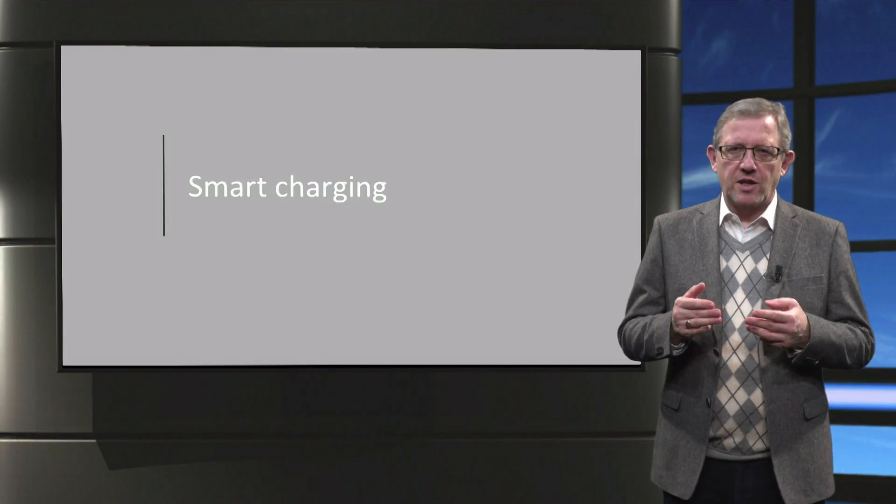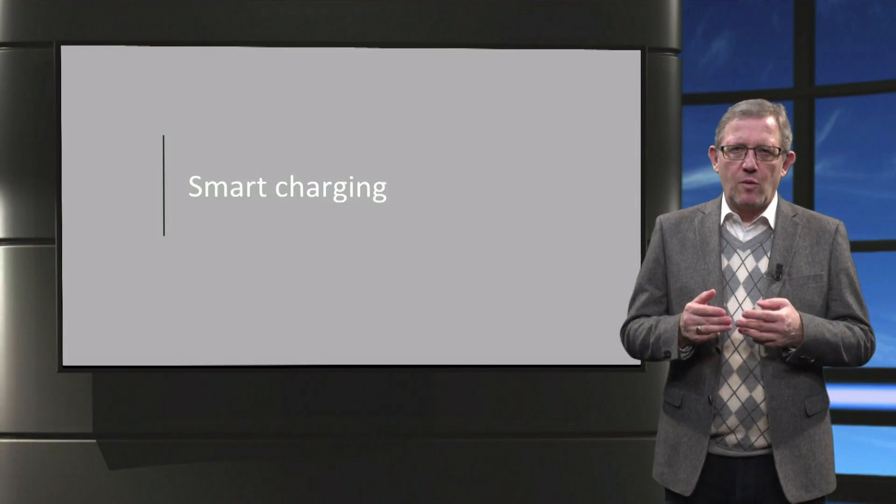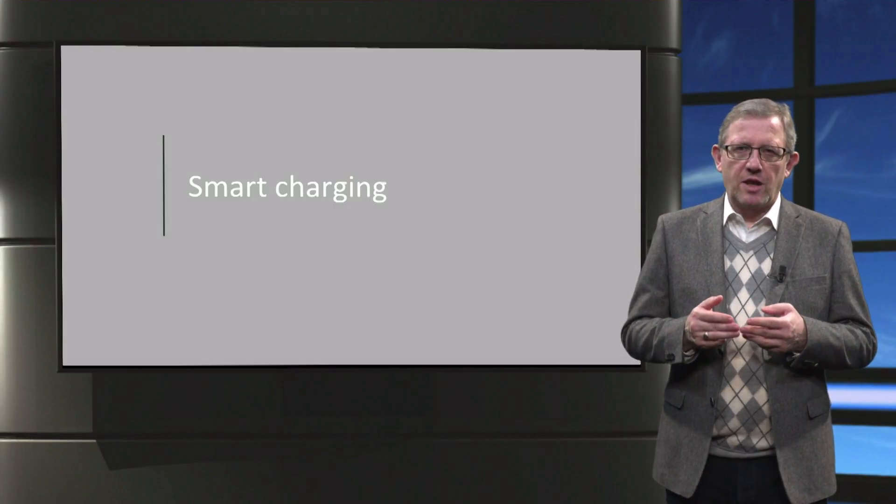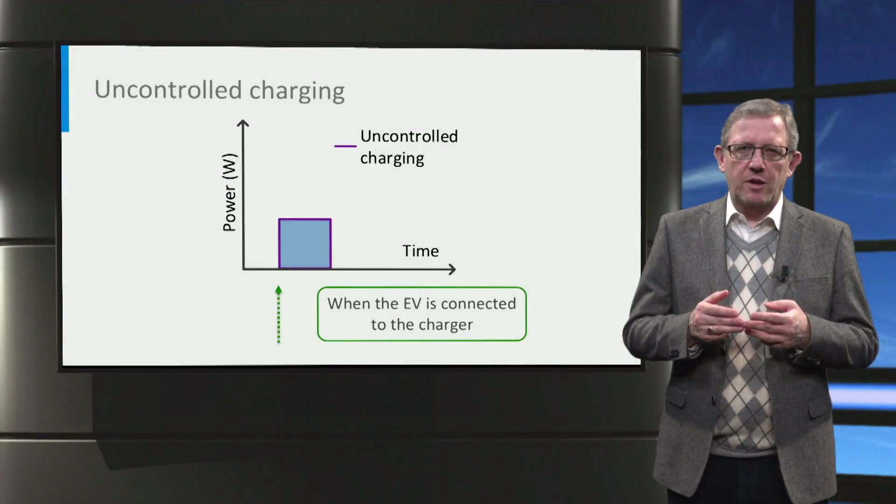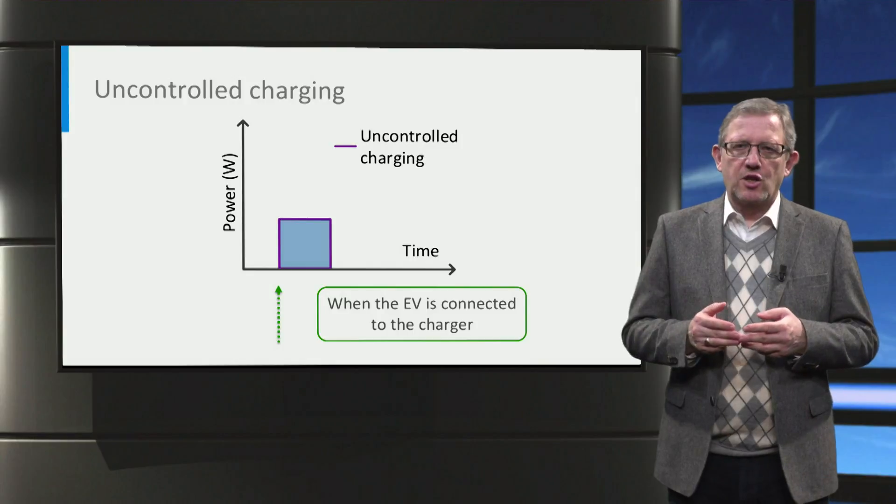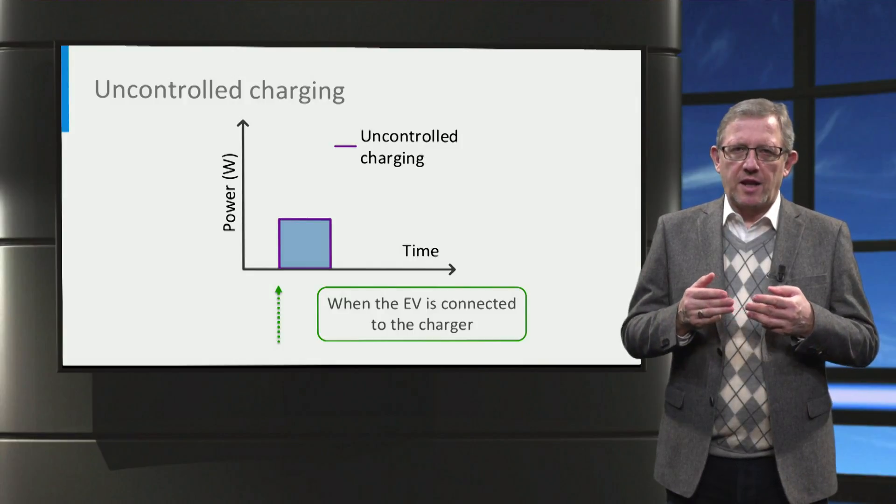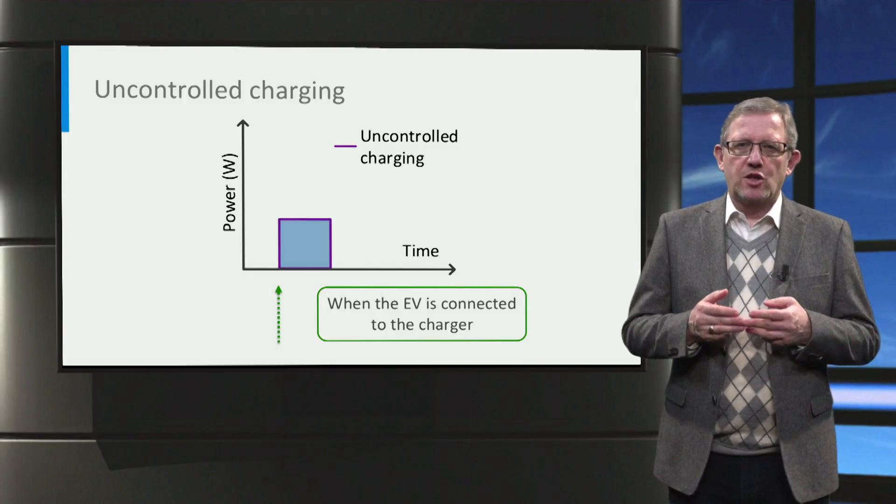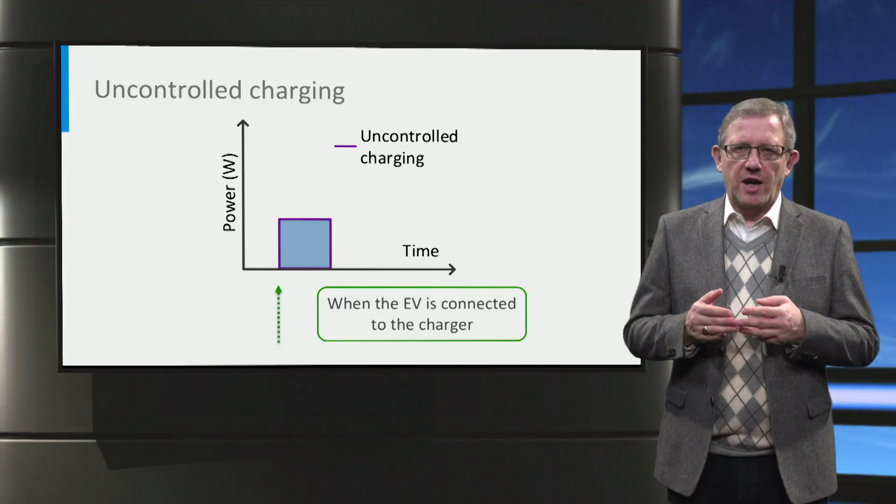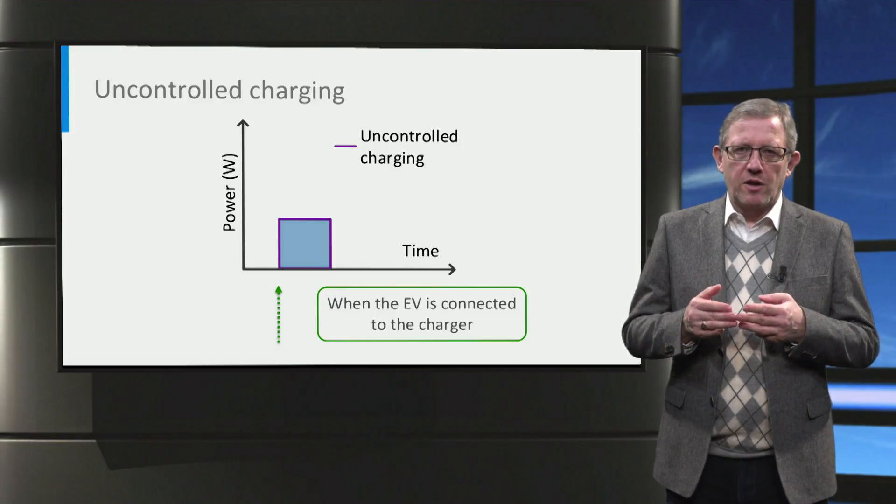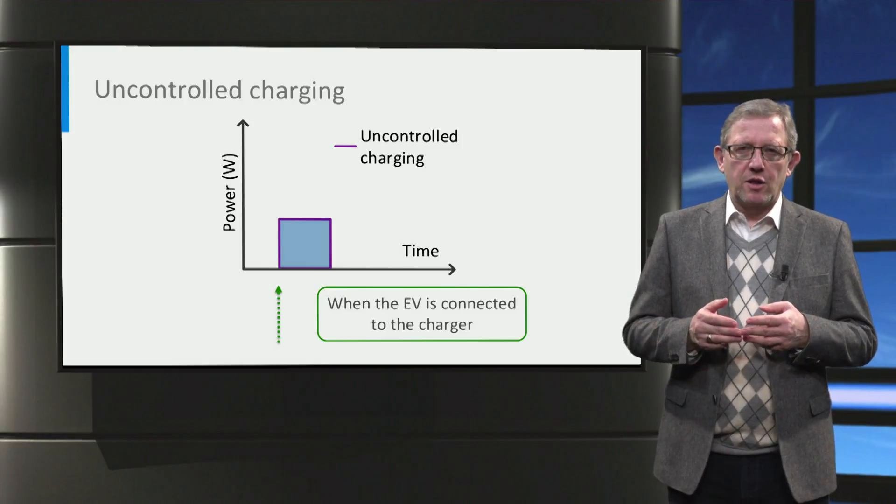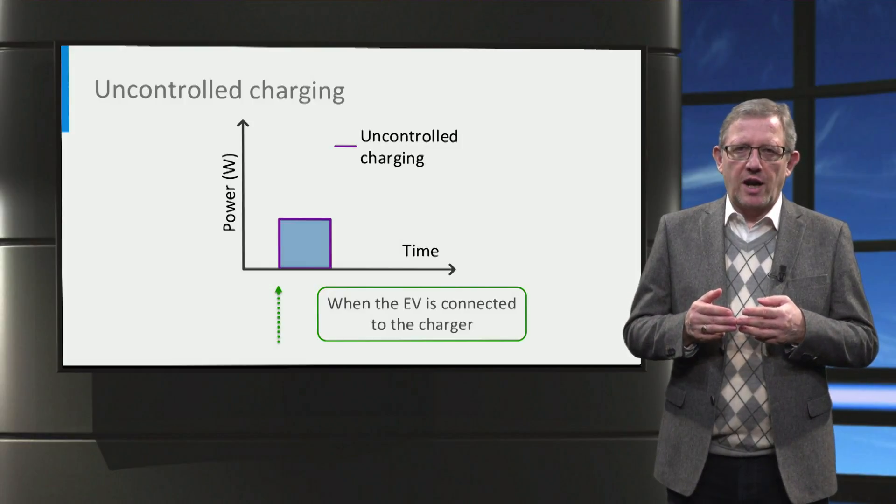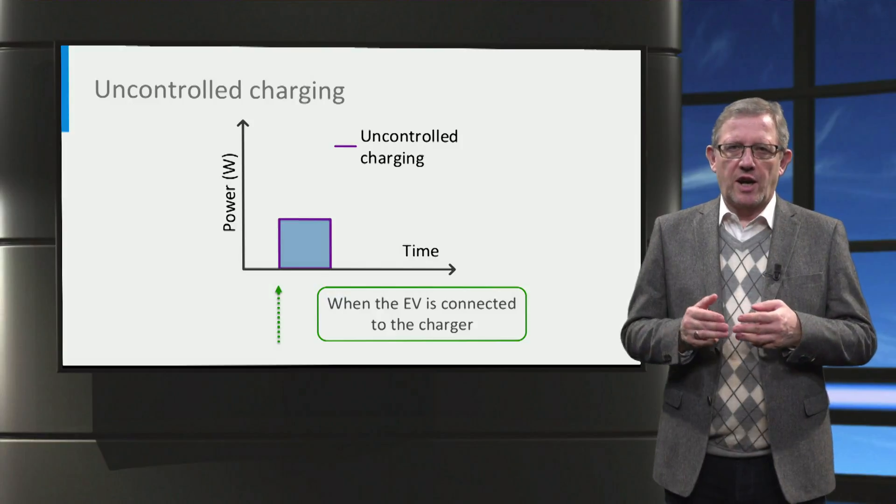Now that we have looked at the charging process, let us now see what is smart charging and how it is different from conventional charging. When we connect an electric vehicle to an EV charger, charging starts as soon as the electric vehicle is plugged in. The charging occurs at a fixed charging power and the charging occurs till the electric vehicle battery is full. This is often referred as uncontrolled charging or conventional charging.